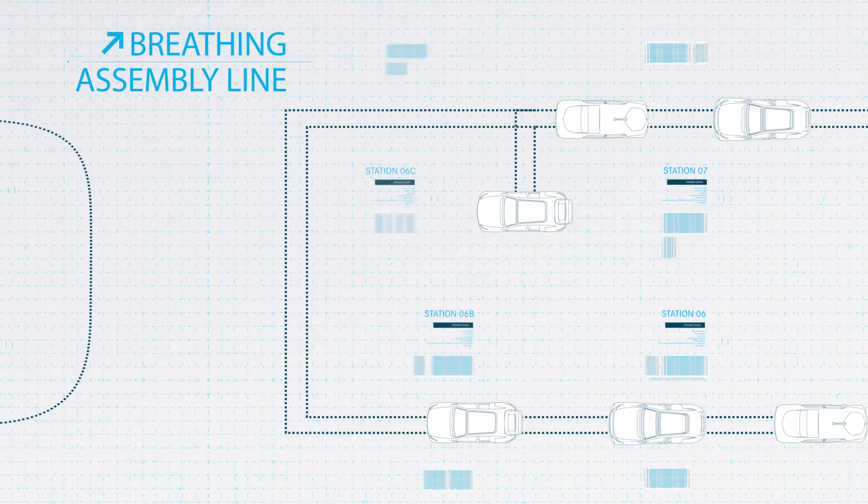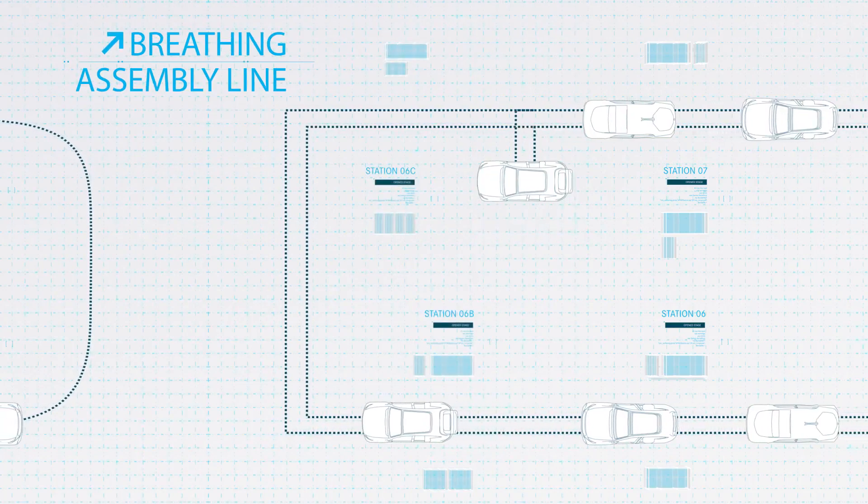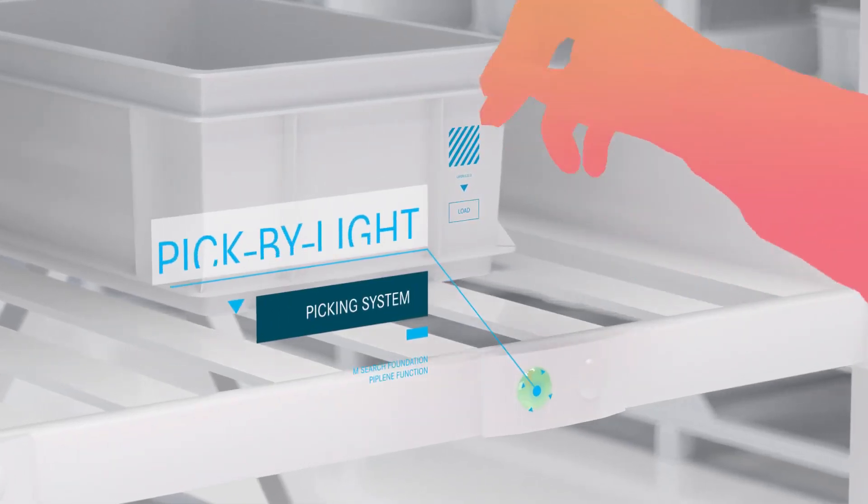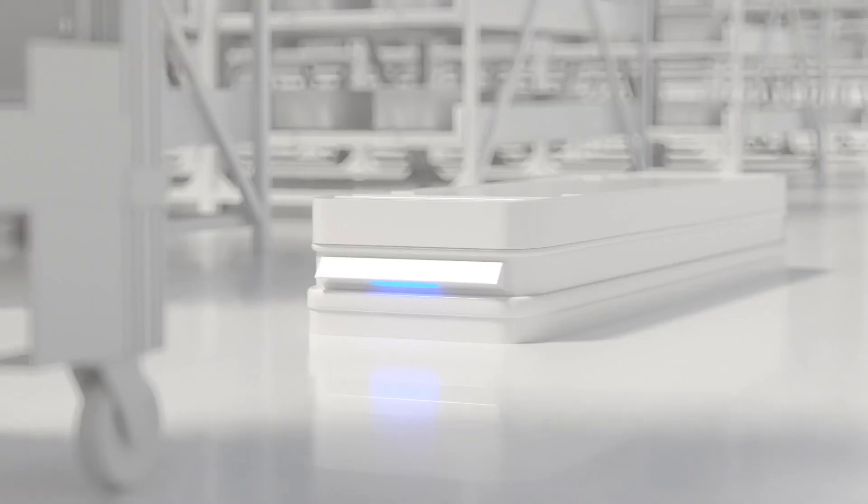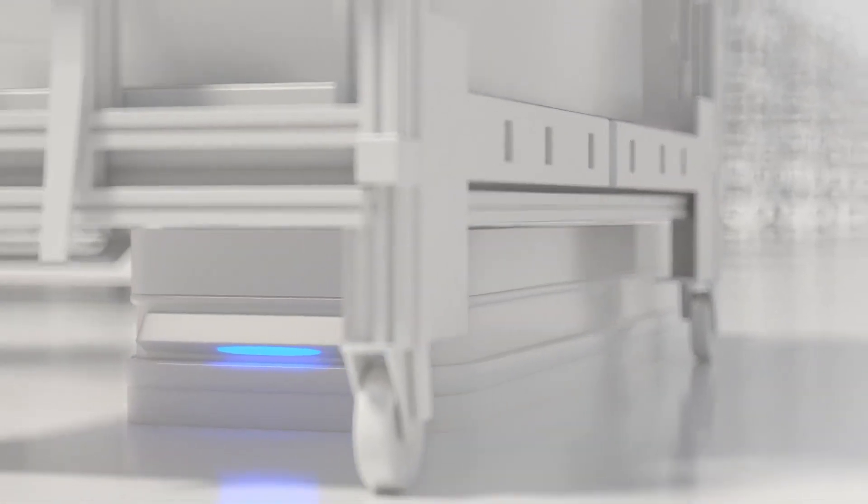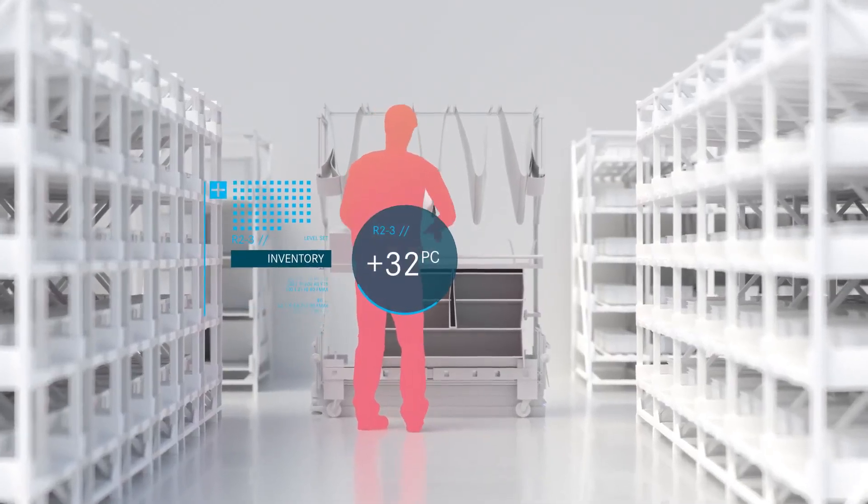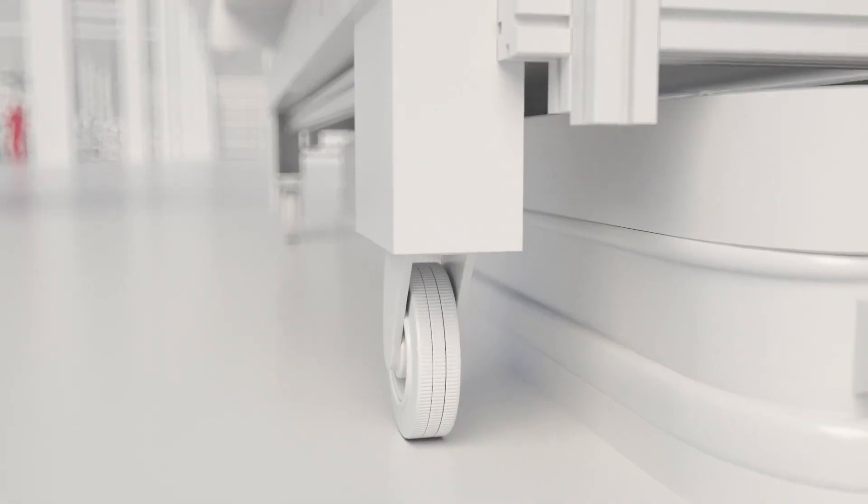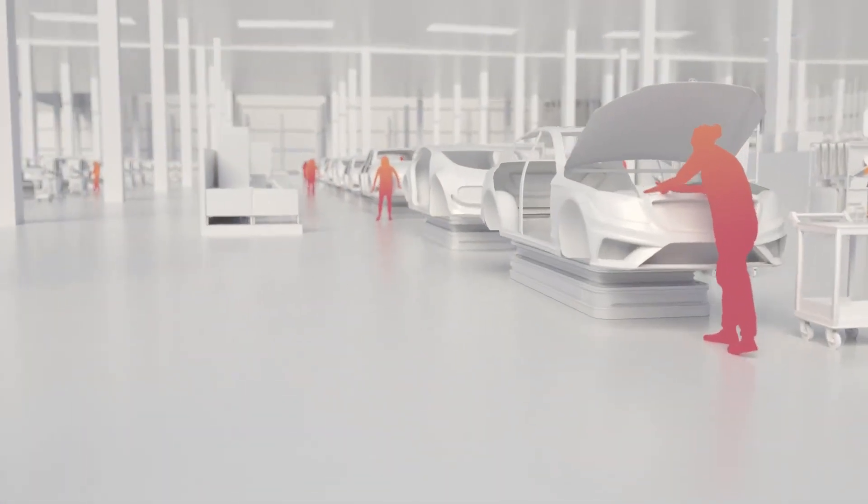Breathing assembly lines have the flexibility to be extended. The consistent use of shopping carts supplied through intelligent picking systems ensures a need-based fast supply for our workers, even in the case of a high number of variants. No system or machine is as flexible as a human being. This also applies to Factory 56.